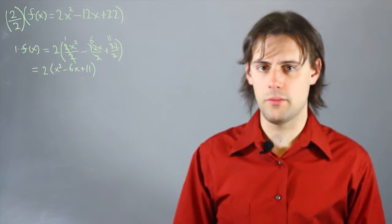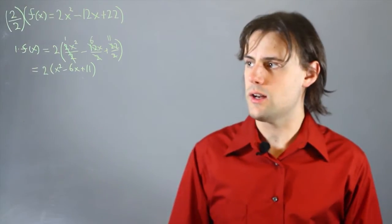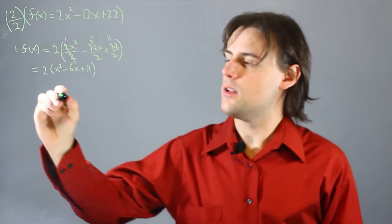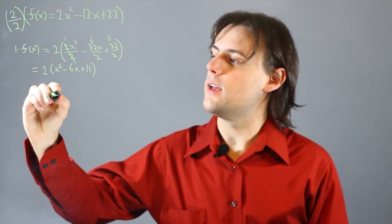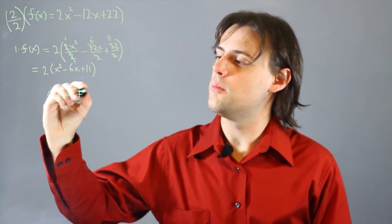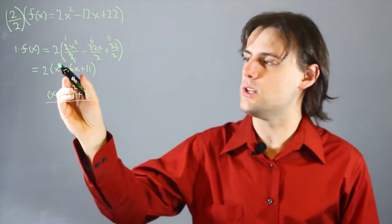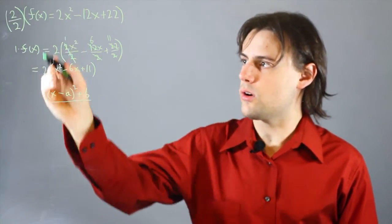The next step is to complete the square. Since this is a quadratic relationship, we can identify the form x minus a squared plus b, and we want to rewrite this portion of our worked out example.